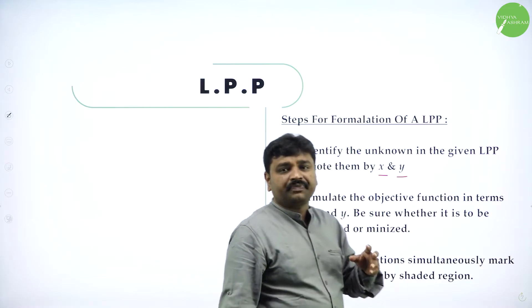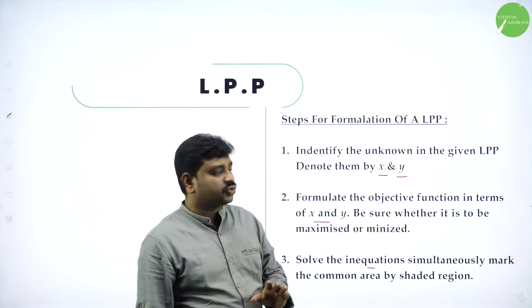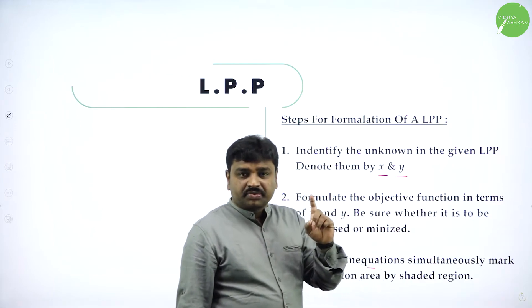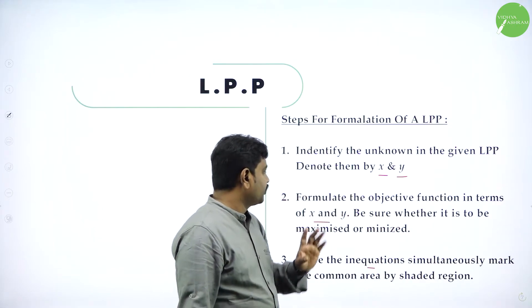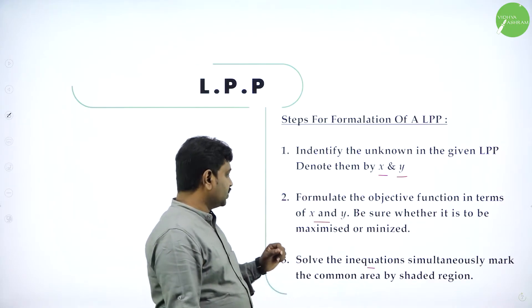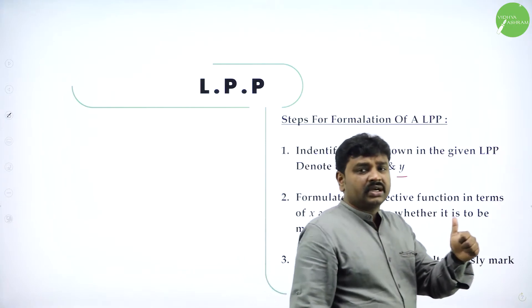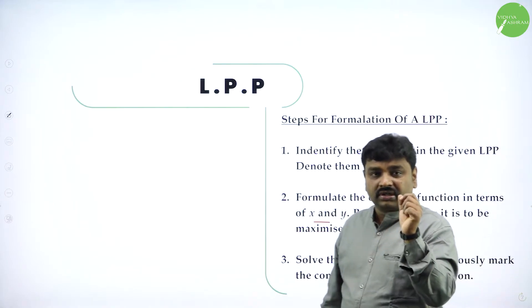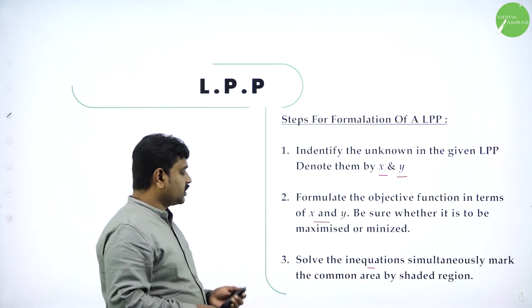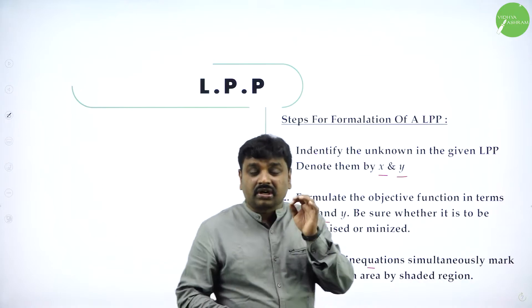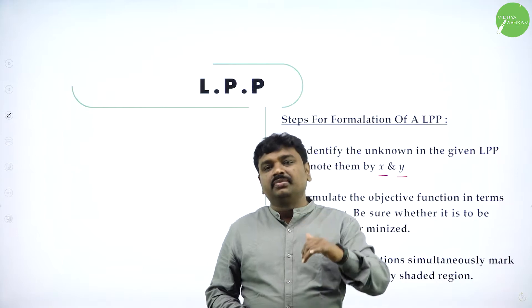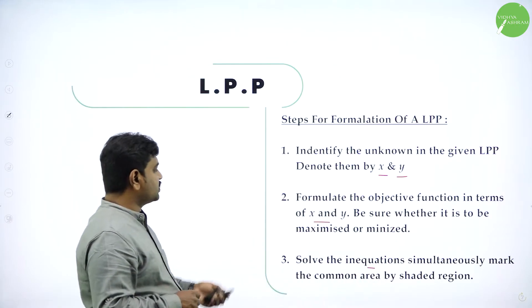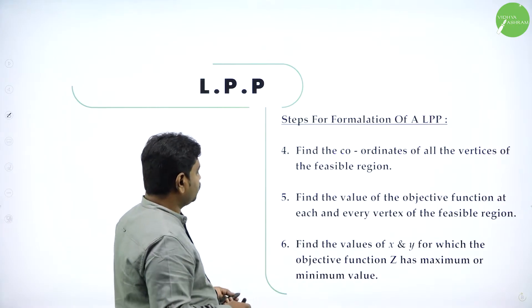Now I will teach you the steps involved. To explain the steps by taking an example will make it easy. There are six steps: identify the unknowns, formulate the objective function, write the constraints as inequalities, draw the graph and find the feasible region — the common region of shading — then find the corner points and substitute them into Z to find the optimal value.